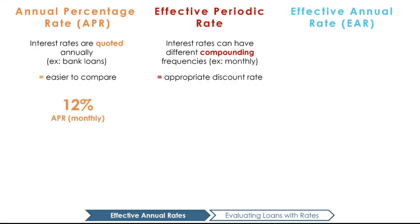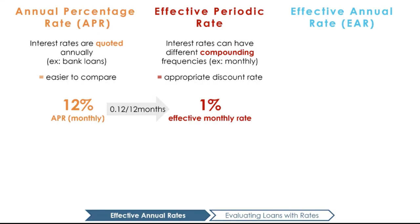For example, I might earn 12% on an investment that is compounded monthly. I would take 12% divided by 12 to determine the interest I earn for each monthly compounding period, which is 1%. But sometimes, instead of APR, we want to know the effective annual rate of interest.